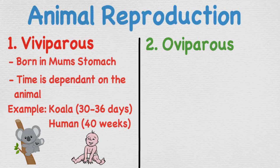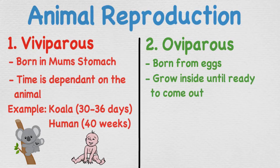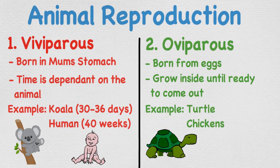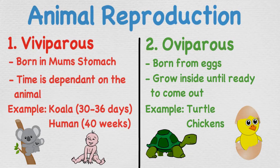Oviparous means the animals are born from eggs — the animals lay eggs and the babies grow within the egg until they are ready to come out. An example is a turtle: the female lays numerous eggs in the sand, and once the baby turtle has grown and is ready, it breaks the eggshell and begins making its way to the ocean. Another common example is chickens.